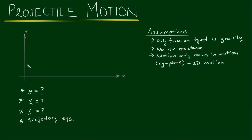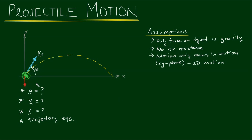Let's draw a picture. We're going to start with our object that's just been fired. We'll put it at the origin, at the start of its trajectory. It's fired with an initial velocity V0 — note that it's a vector — at an angle theta with respect to the horizontal. It was Galileo that initially showed that the path of a projectile is a parabola, and we're going to confirm that result.